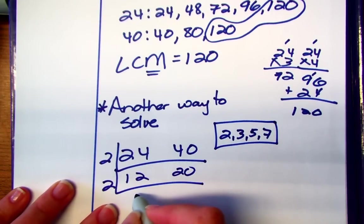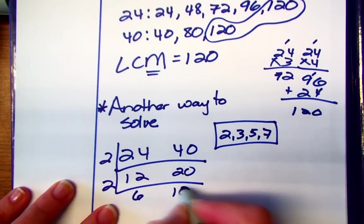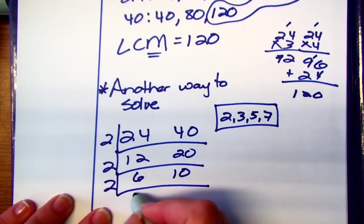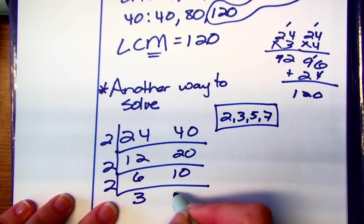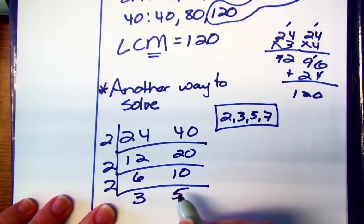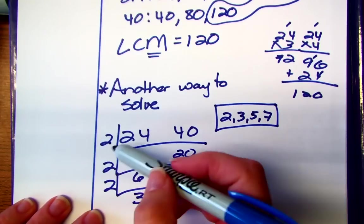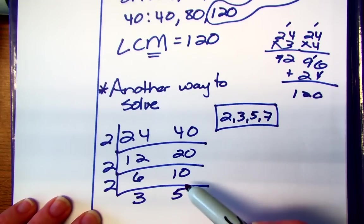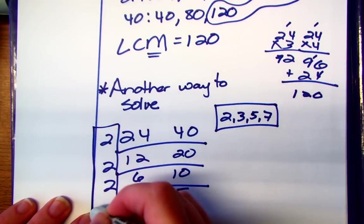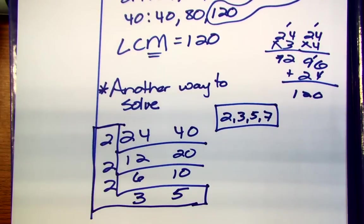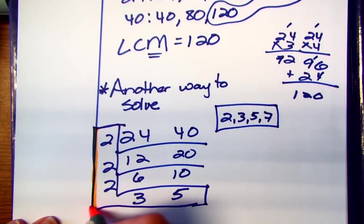12 divided by 2 is 6, 20 divided by 2 is 10. I'm going to factor out another 2 so this gives me 3 and 5. Now there's nothing else I can factor out and notice they're all prime numbers. So once you get down to all prime numbers you're done. Notice I've made my little L and your L's are going to look different depending on what numbers you do.